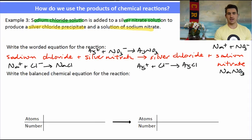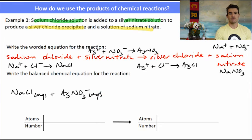NaCl, a solution, so aqueous, plus AgNO3, again a solution, so it's aqueous, reacts to form, so goes to, now our precipitate, AgCl will be solid. Our precipitate is a solid. Plus sodium nitrate, NaNO3, which is aqueous. The order is not important.